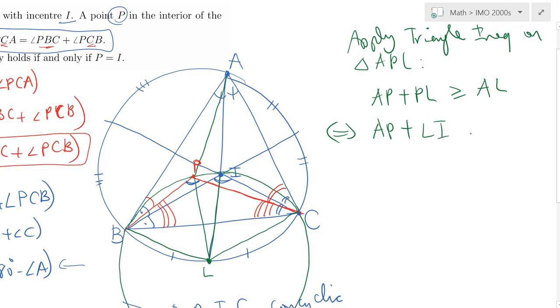But this is equivalent to saying AP plus PL can be replaced, because L is the center of this circle and P is on that circle, so we have AP plus LI is greater than or equal to, if we can split AL as AI plus LI, it's the sum of the two. But then the LI's would simply cancel out, implying therefore that AP would simply be greater than or equal to AI.